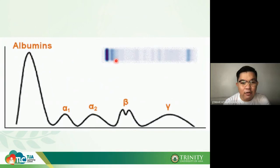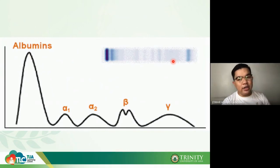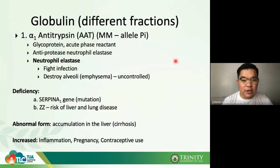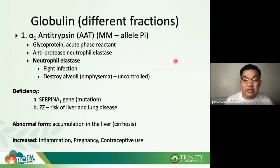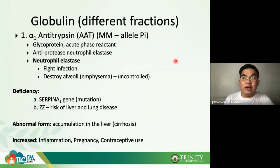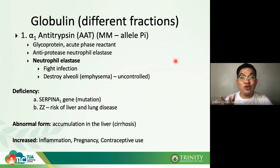The first globulin is alpha-1 antitrypsin or AAT. It is a glycoprotein and a positive acute phase reactant. It functions as an anti-protease and specifically inhibits neutrophil elastase.